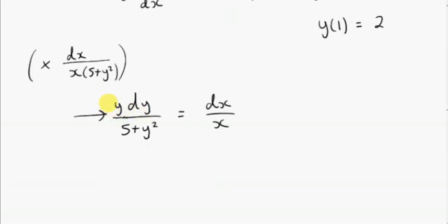The next step, as we know, is just to integrate both sides. The right-hand side integral is straightforward: it's integral of 1 over x with respect to x — that's a special integral, it's ln of x. We get an arbitrary constant which I'll put here, and this constant involves the constant from the left-hand side as well, brought over to the right-hand side and put into one constant.